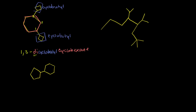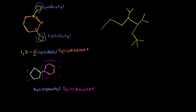Let's try this one right here. I have a 5-carbon ring: 1, 2, 3, 4, 5. And then I have a 1, 2, 3, 4, 5, 6 carbon ring. So this is going to be the main ring — that is a cyclohexane, six carbons in a cycle, all single bonds. And attached to that, I have a cyclopentyl group. We don't have to number it because it's only one group attached to the main ring. So this is cyclopentyl attached to cyclohexane: cyclopentylcyclohexane.